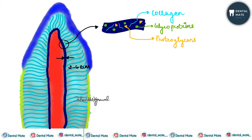Pre-dentine is located adjacent to the pulp tissue with a thickness of two to six micrometers. Its width depends on the extent of activity of odontoblasts, and it is thickest during odontogenesis.